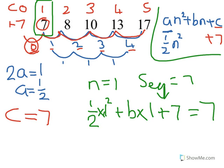So now we've got quite a simple formula. Let's do some of the number work. We've got a half times 1 squared, so that's a half, plus B, plus 7, equals 7. I want to get B on its own, so B equals — rearranging that, doing a bit of number work — B equals minus one half.